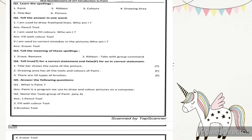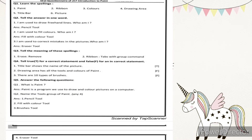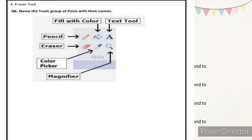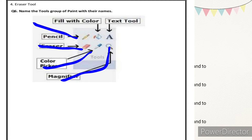Number two: name the tools group of paint, any four. The tools group of paint includes pencil tool, fill with color tool, brushes tool, and eraser tool. The full list includes pencil tool, eraser tool, color picker tool, magnifier (used to zoom the picture), fill with color tool, and text tool.